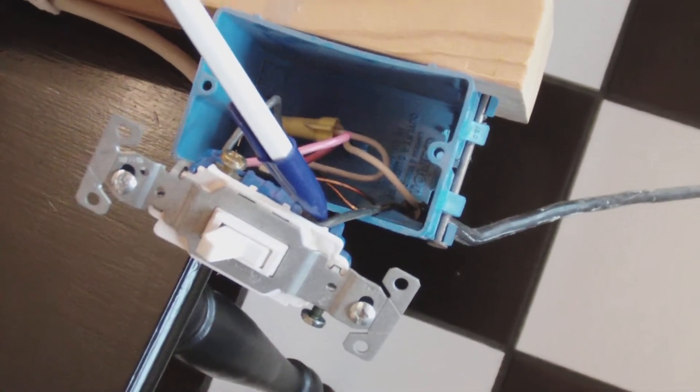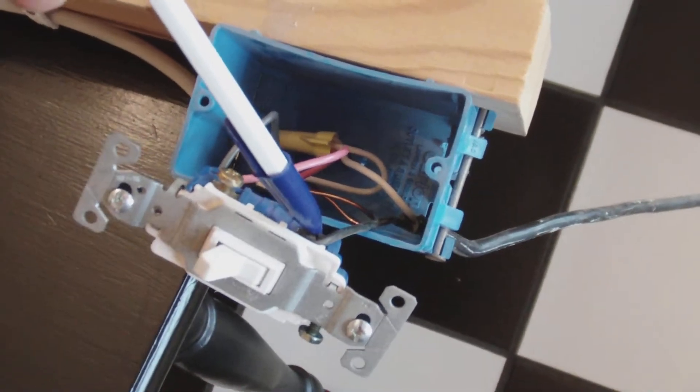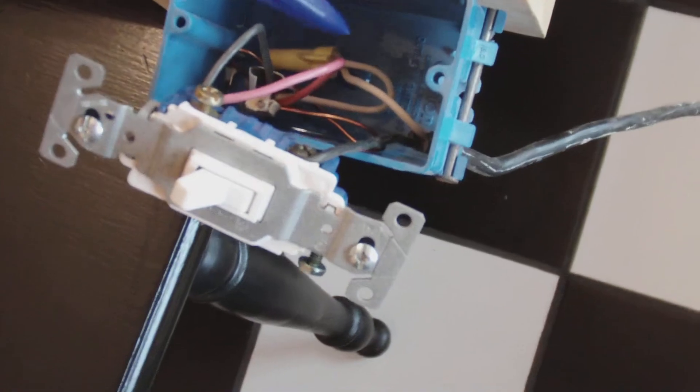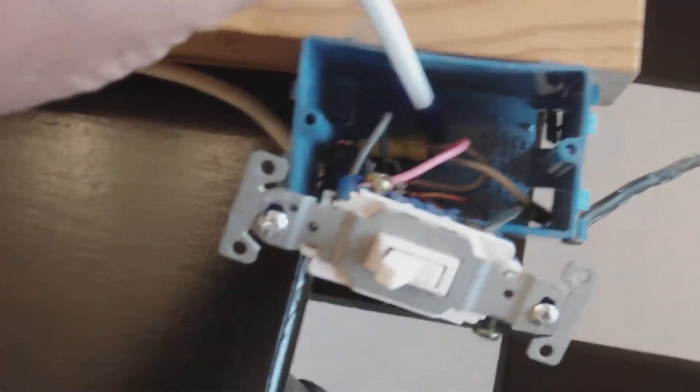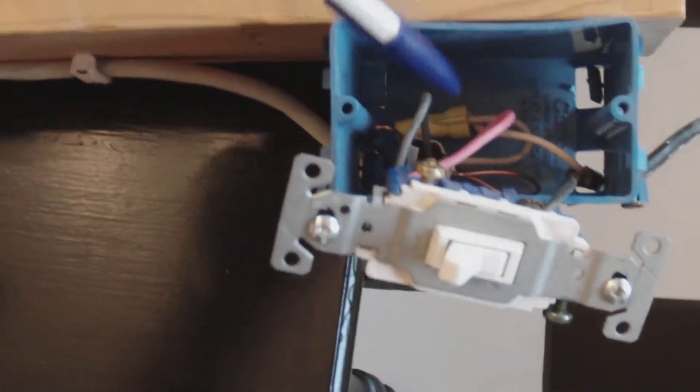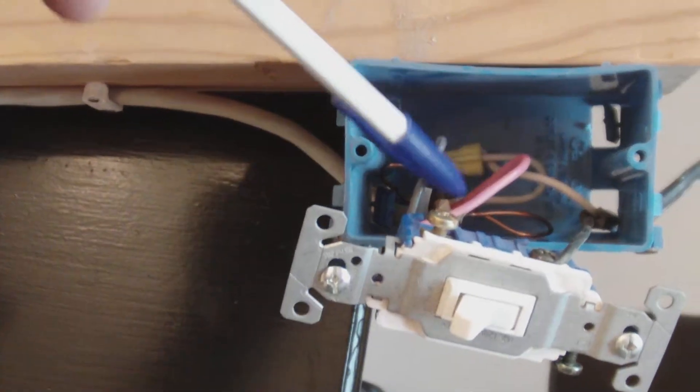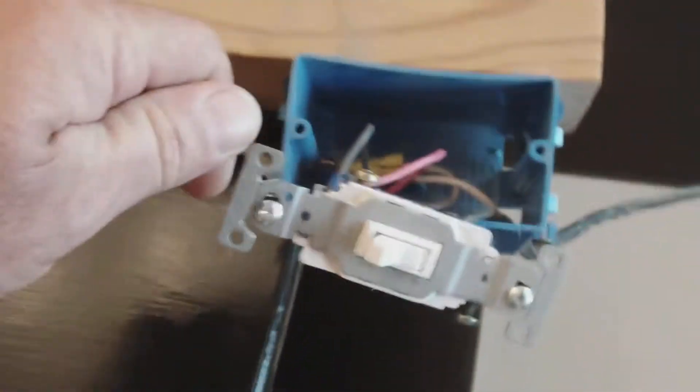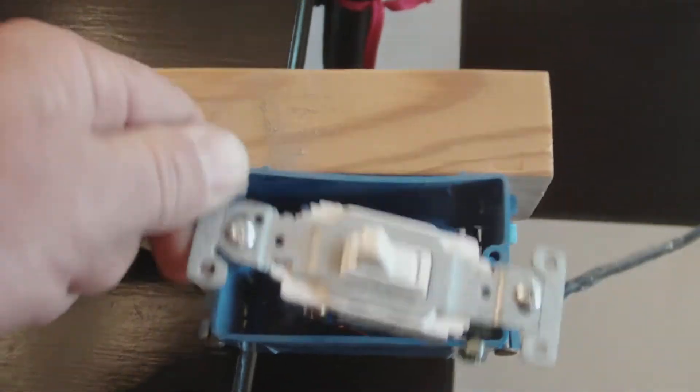Simply take the black power wire and connect it to the black screw on the three-way switch. That will leave you with the white wire connected here. Then your traveler wires, which are black and red, you can connect them to either side of this switch. It makes no difference, either side.